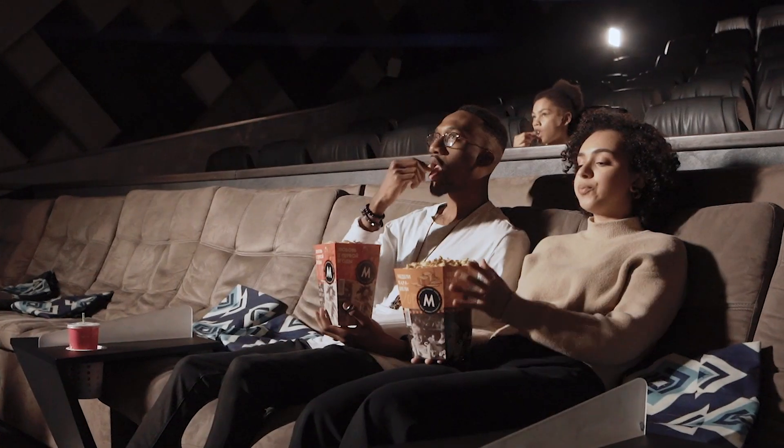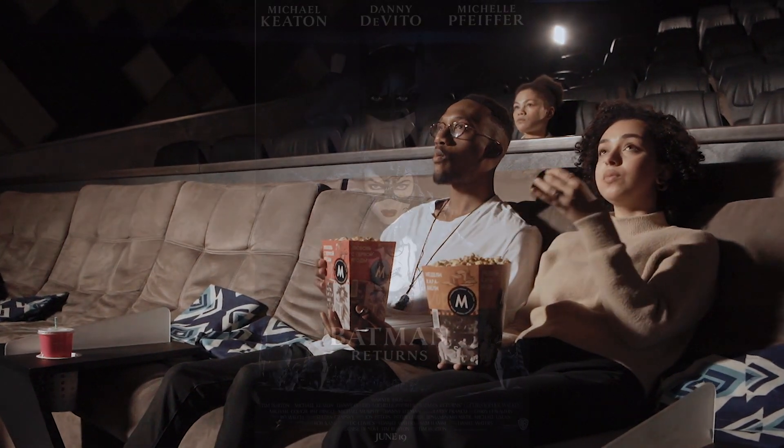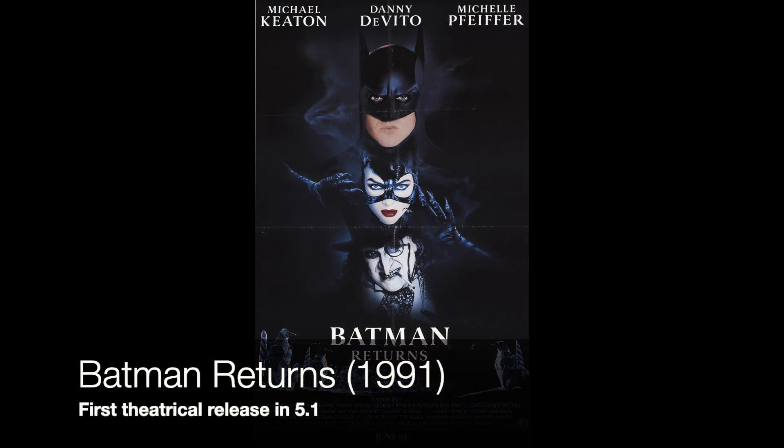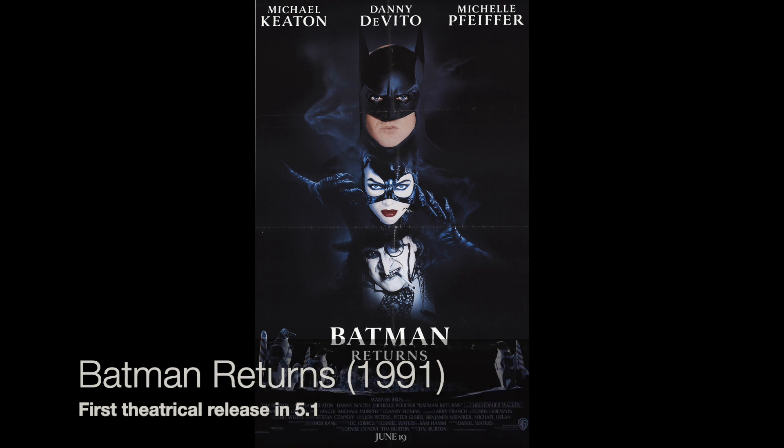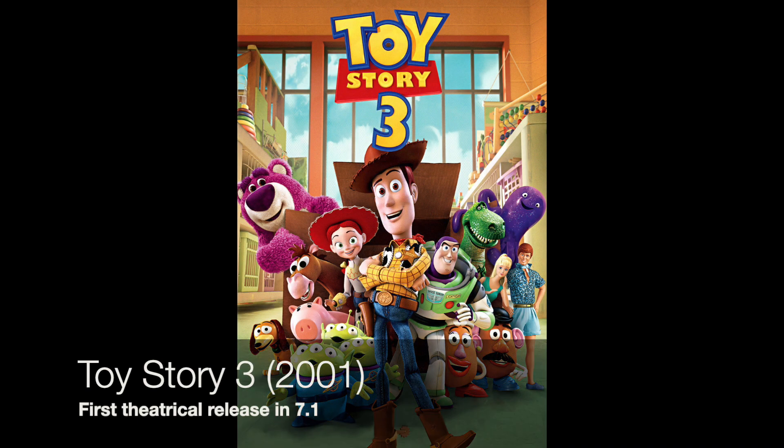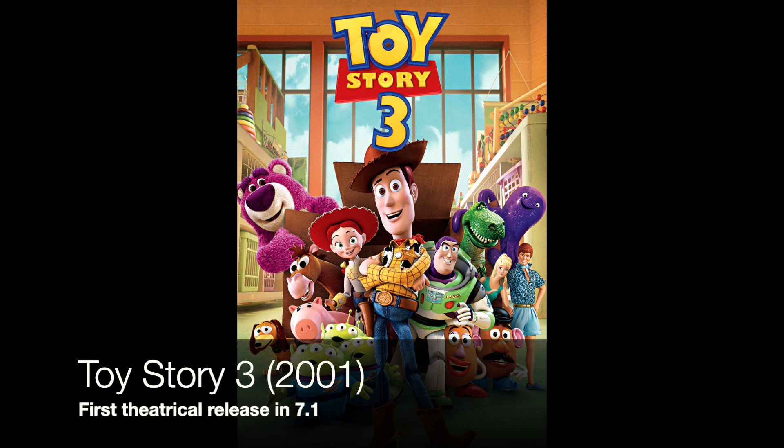That said, movie theaters have always been ahead of home systems, so to give a few dates, in 1991 Batman Returns was the first film presented in 5.1 in cinemas, and in 2001 Toy Story 3 was the first 7.1 film.